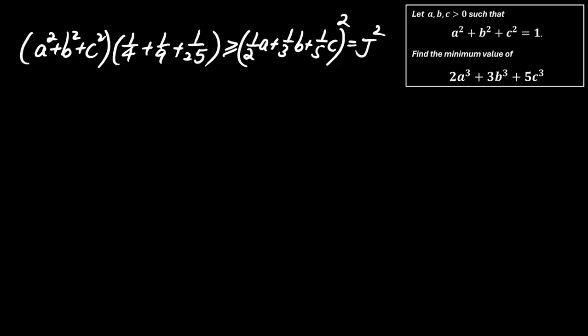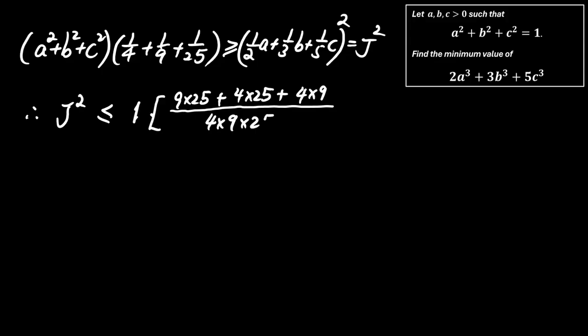Since a squared plus b squared plus c squared equals 1, J squared is at most 361 over 900, or 19 over 30 squared.